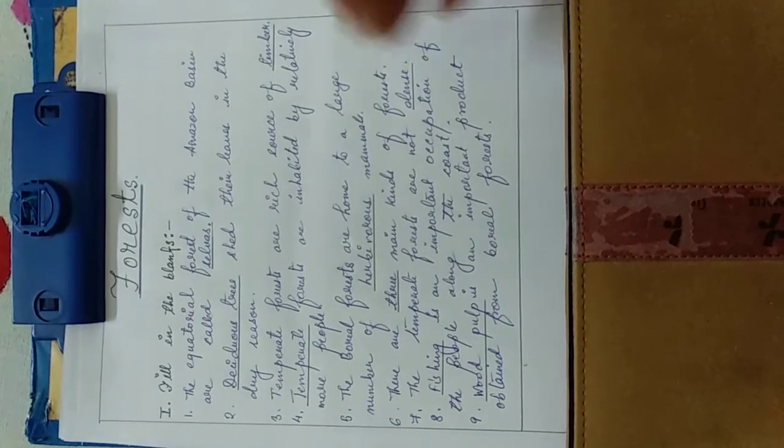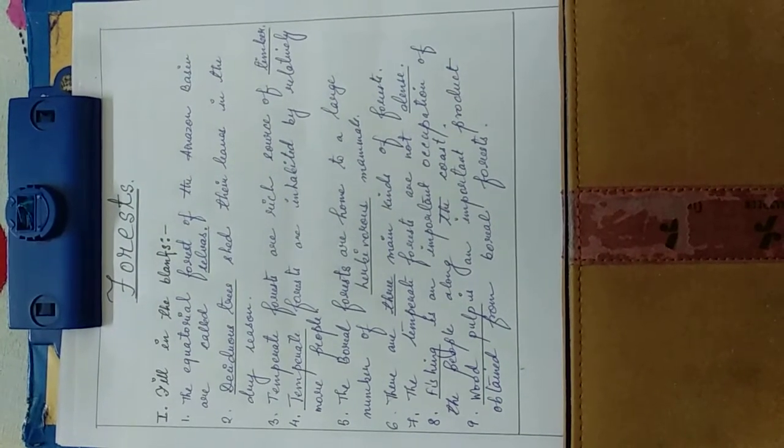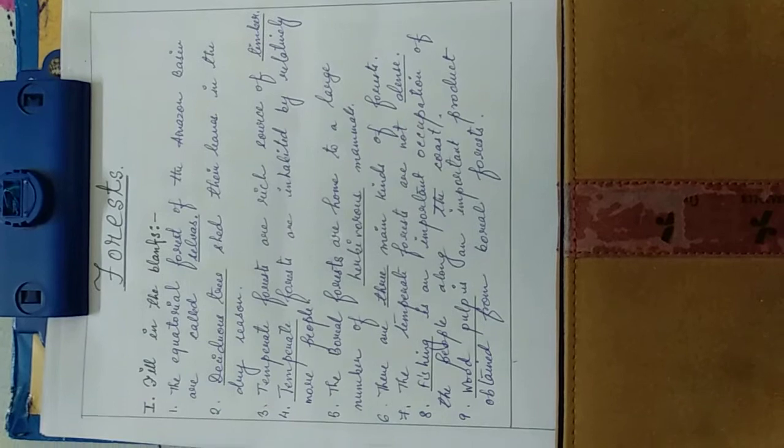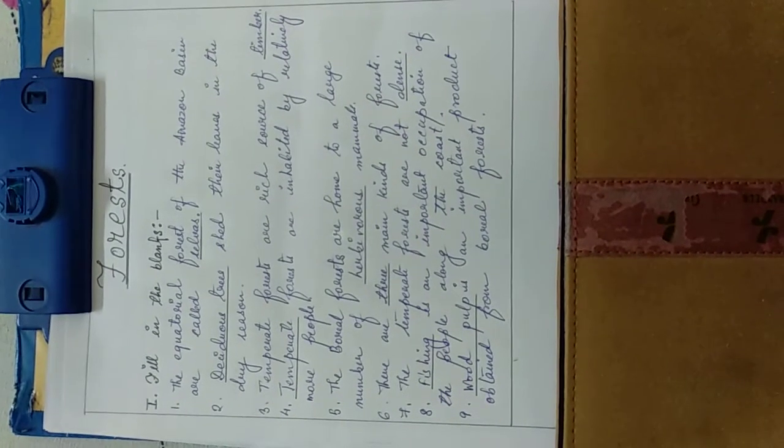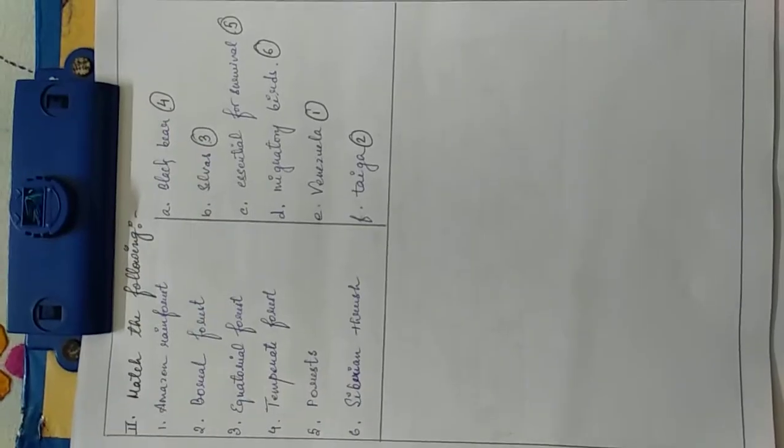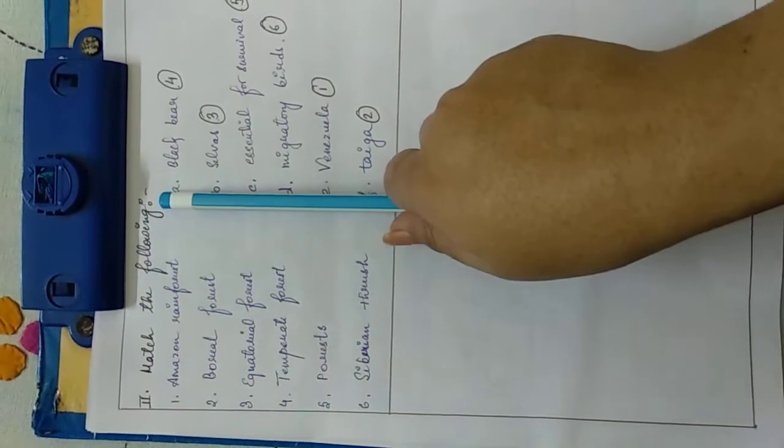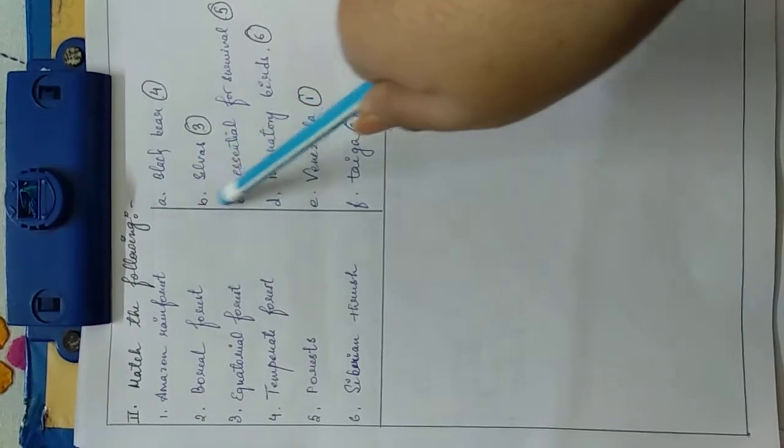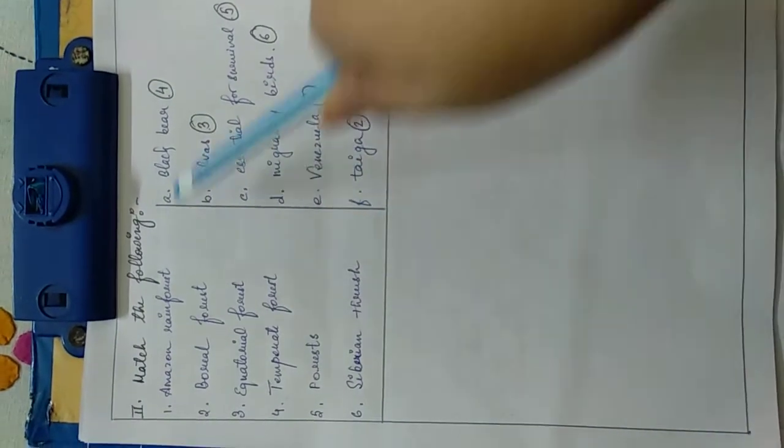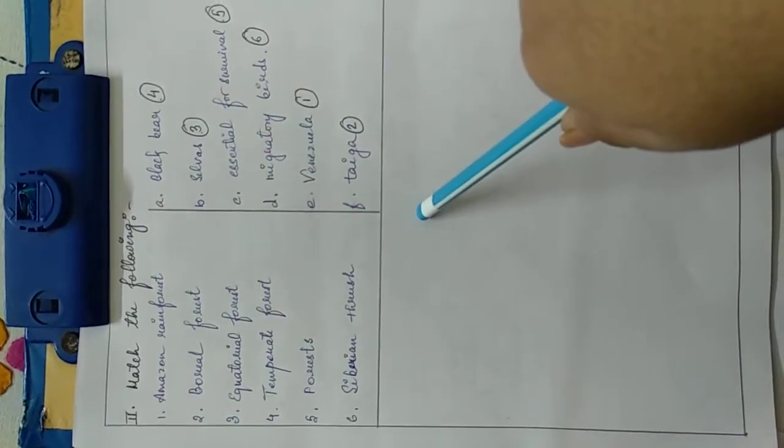So now after the first topic we will move on to the next topic and we will do that in the next page. Yes, so now this is our second topic, number two: match the following. Here we will draw two columns by drawing one line from the middle.